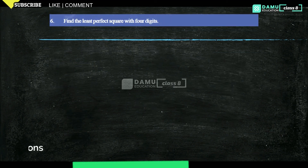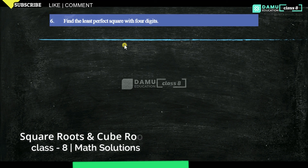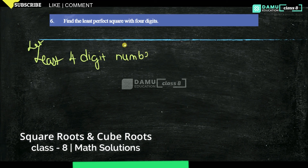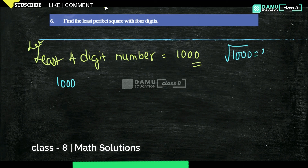Our next question: find the least perfect square with a 4-digit number. The least 4-digit number is 1000. We need to check whether 1000 is a perfect square or not by using the division method.